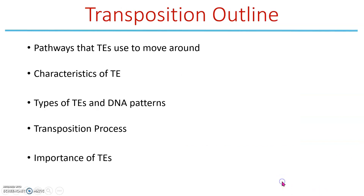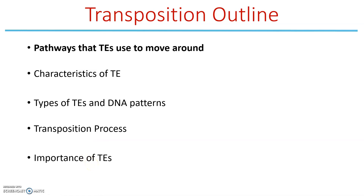Because this topic is new, I've provided an outline I'll keep referring to so you know what we're talking about. We'll start with two pathways that transposable elements use to move around the genome, then talk about their characteristics and the enzymes necessary for them to work, four types of transposable elements, the transposition process, and their biological importance.